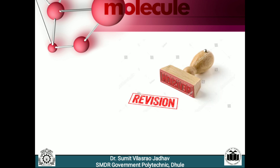Before proceeding further, we will have to revise what we have learned till now, up to your 10th standard level. The first concept is atoms. An atom is nothing but the smallest particle which cannot be further subdivided. In Marathi it is called as 'Anu'. The next concept is molecule. Molecules are formed by certain kinds of chemical bonds between similar or dissimilar atoms. In Marathi we call it 'Renu'.